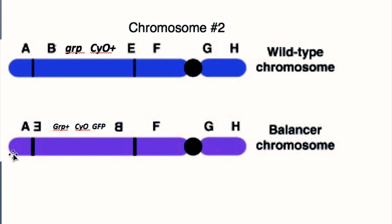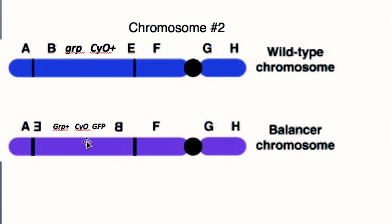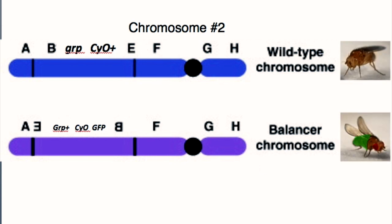This is probably the most important thing to pay attention to in this tutorial. The wild type chromosome number 2 in our flies has a mutated grapes and normal curly wings. So if a fly had two copies of this wild type chromosome, it would be a double mutant for grapes and would not have curly wings. The balancer chromosome in our flies has a wild type grapes, mutated curly wings, and GFP. These three genes are linked, so anytime wild type grapes is present it will also have curly wings expressed and GFP. If you see a fly that's glowing, you know it also has curly wings.